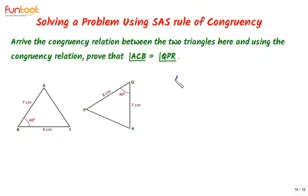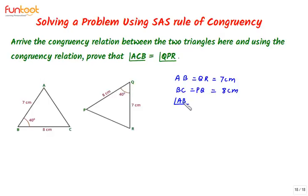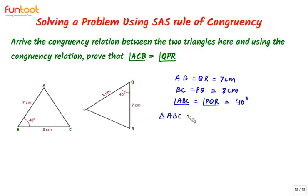From the given data: AB equals QR equals seven centimeters, BC equals PQ equals eight centimeters, and the included angle ABC equals angle PQR equals 40 degrees. With two pairs of equal sides and the included angle equal, by the SAS rule, triangle ABC is congruent to triangle RQP.